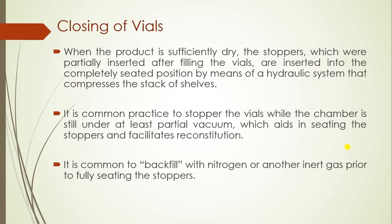After secondary drying is completed, the next stage is closing of the vial. When the product is sufficiently dry, the stoppers which are halfway closed or partially inserted into the vial are completely sealed by a hydraulic system that compresses the stack of the shelf, fully closing the halfway-inserted closures into the vials. It is common practice to stopper the vials while the chamber is still under at least partial vacuum, which aids in seating the stoppers. It is also common to backfill the product with an inert gas such as nitrogen or argon prior to fully setting the stoppers.